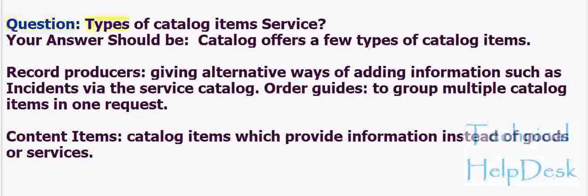Question: Types of Catalog Items in Service? The catalog offers a few types of catalog items. Record Producers: giving alternative ways of adding information such as incidents via the Service Catalog. Order Guides: to group multiple catalog items in one request. Content Items: catalog items which provide information instead of goods or services.